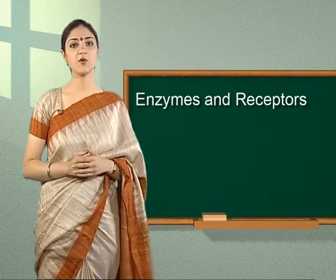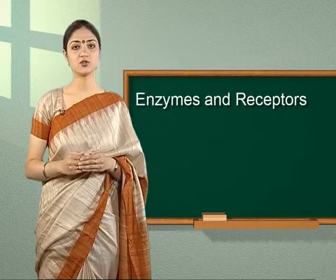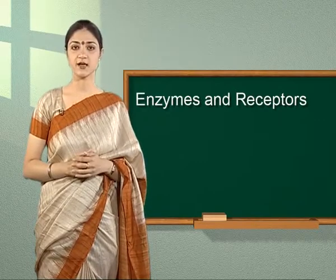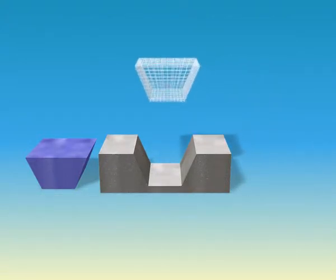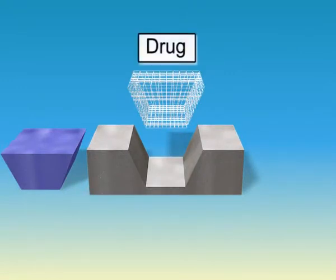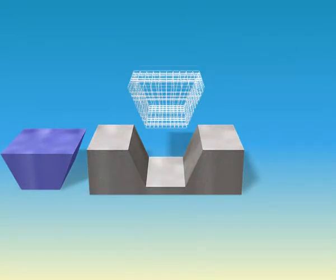Now we will discuss how drugs interact with targets. Enzymes as drug targets: in order to understand the interaction between a drug and an enzyme, it is essential to know how enzymes catalyze the reactions. In their catalytic activity, enzymes perform two major functions. Let us discuss them one by one.